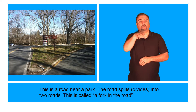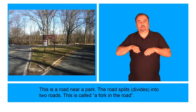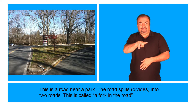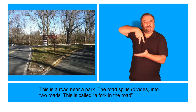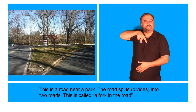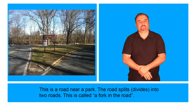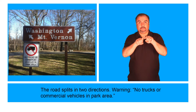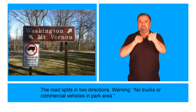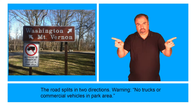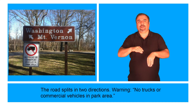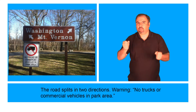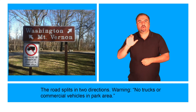This is a road near a park. The road splits or divides into two roads. This is called a fork in the road. The road splits in two directions. No trucks or commercial vehicles in the park area.